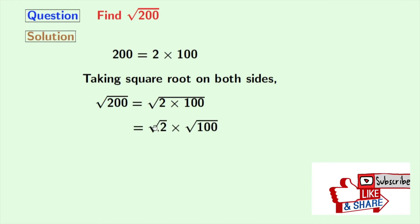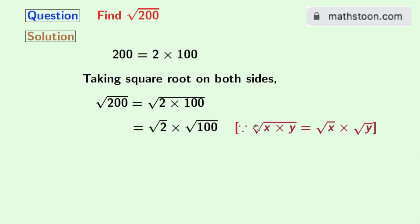As we all know that square root of x times y is equal to square root of x times square root of y. Here x is 2 and y is 100.